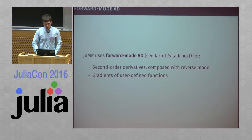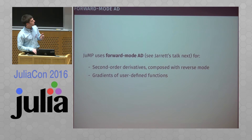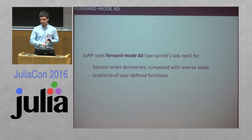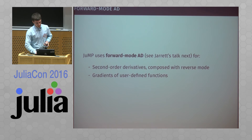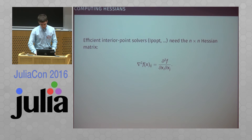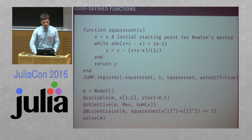JuMP also uses forward mode AD, which I'll discuss next. JuMP uses forward mode AD in two different contexts: one for second-order derivatives and one for gradients of user-defined functions. Reverse mode gives us gradients very efficiently; forward mode AD is what we use to get second-order derivatives. I'll skip second-order derivatives for now and talk about user-defined functions.